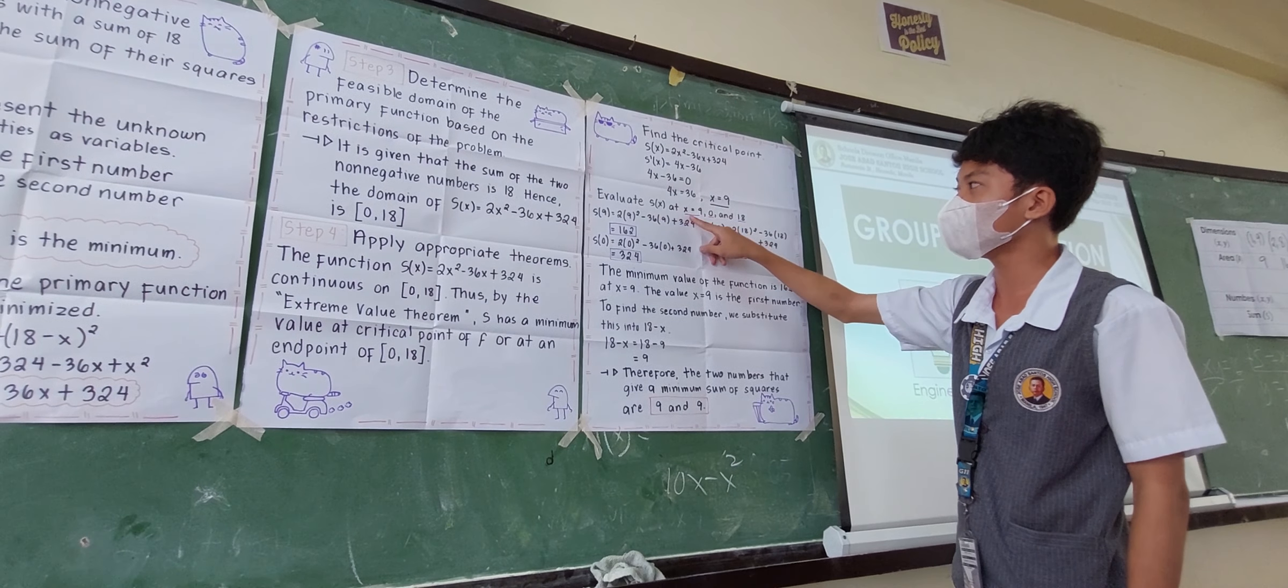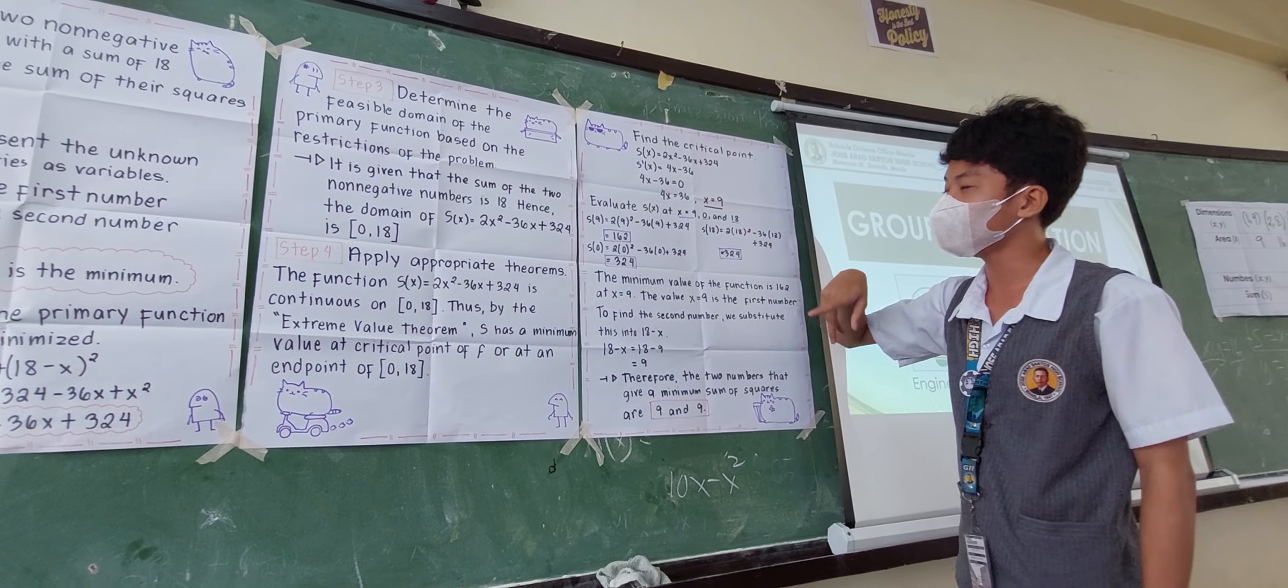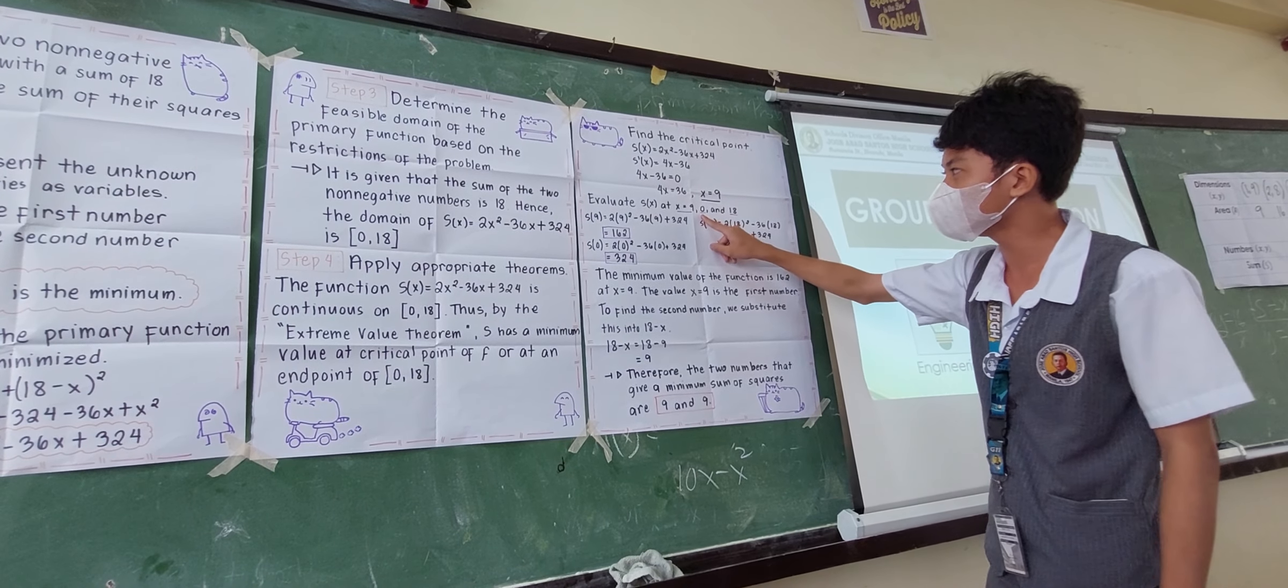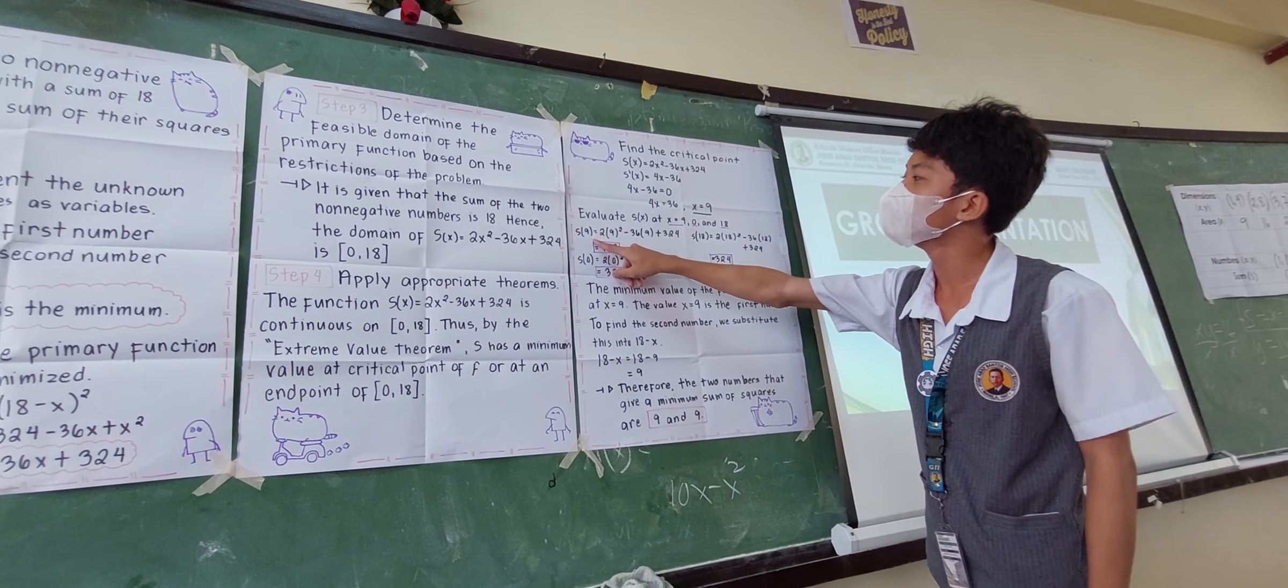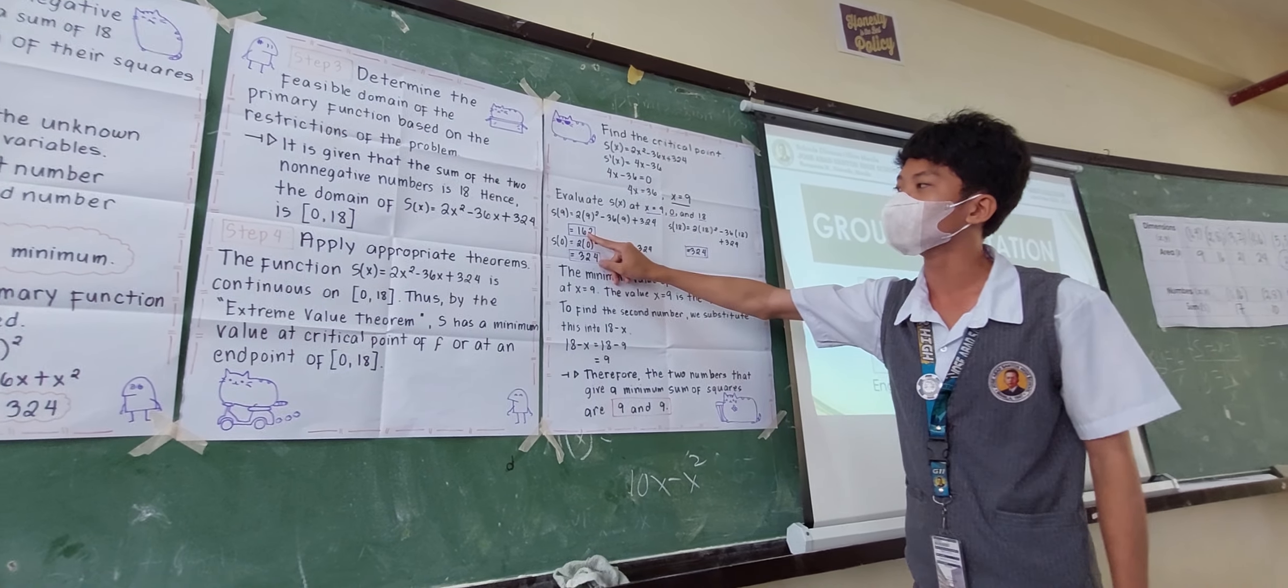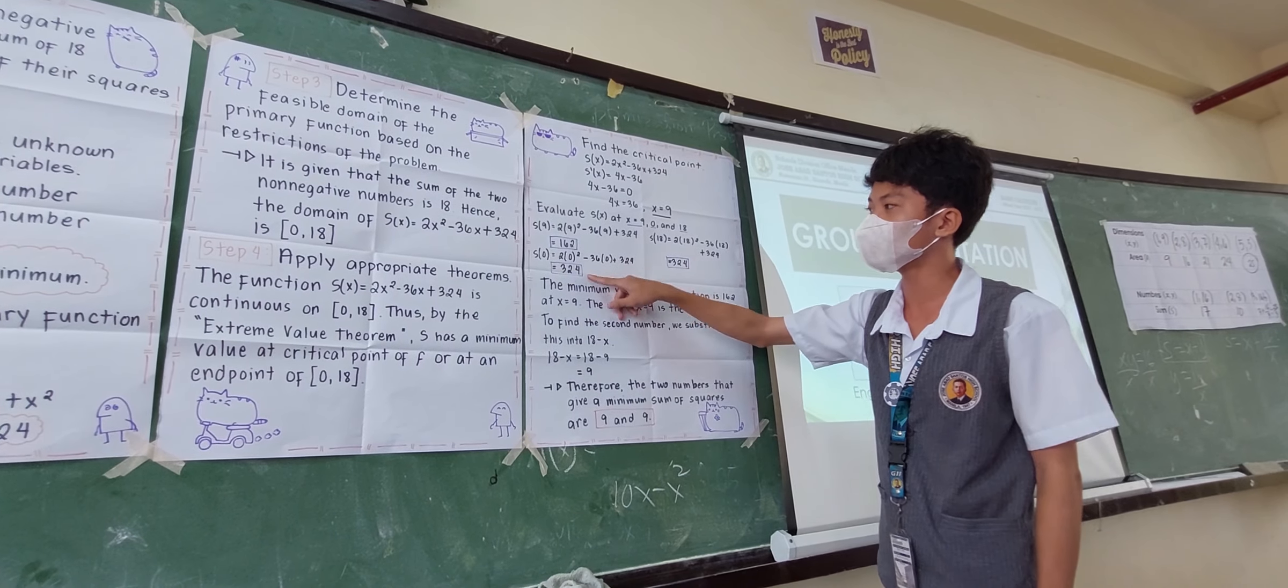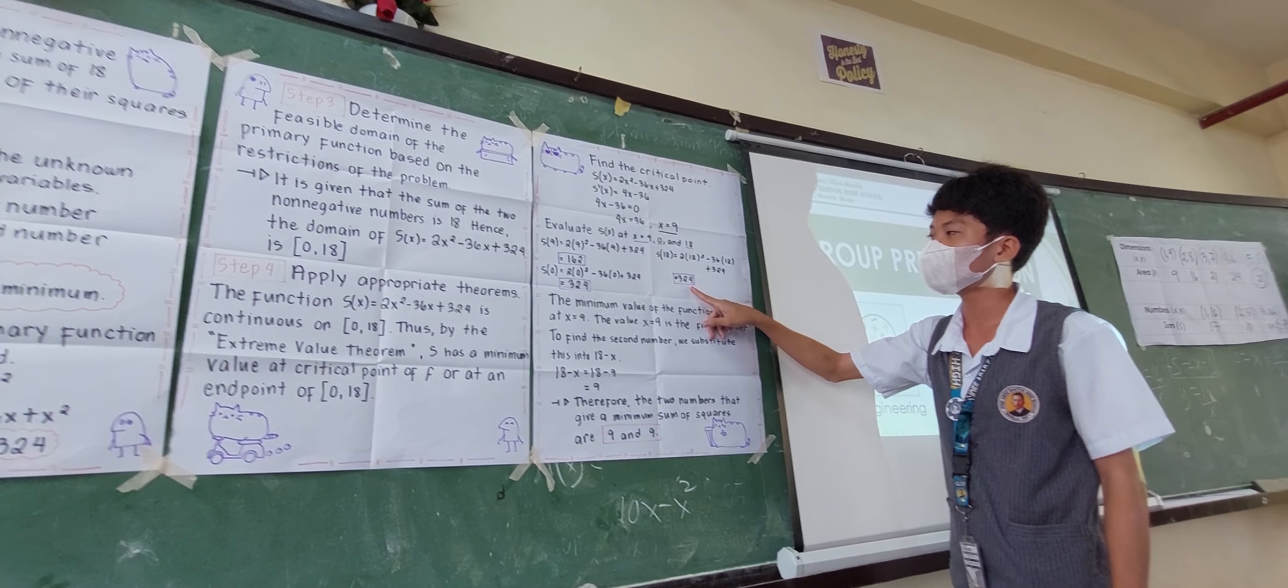Evaluate S of X at X equals 9 and the interval endpoints from 0 to 18, which is X equals 0 and X equals 18. By substituting 9 into the given S of X, for S of 9, we got 162. For S of 0, we got 324. And for S of 18, we got 324.